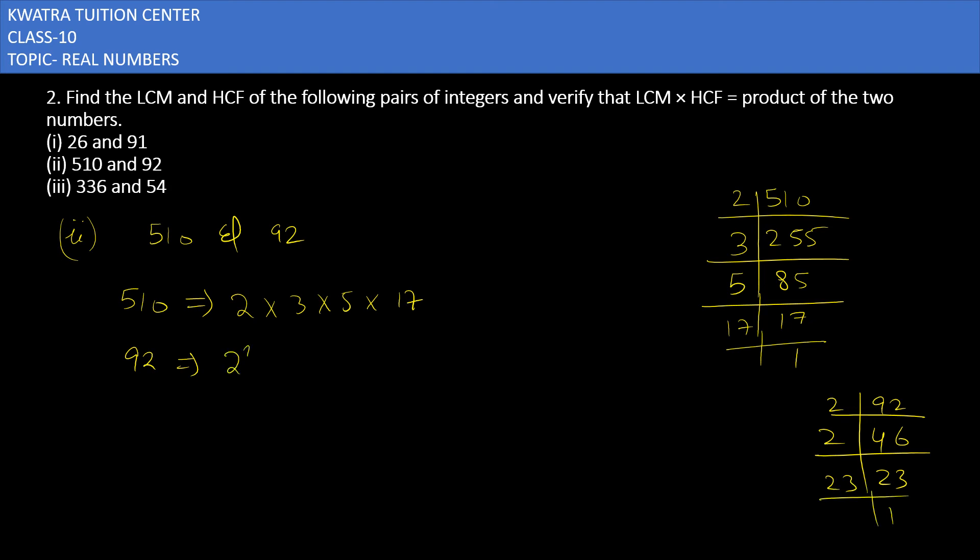Now let us write the LCM and HCF. HCF is very simple: it will be 2, as you can see the highest common factor is 2 in both cases.